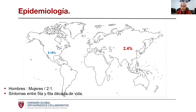En cuanto a la epidemiología, sabemos que es una enfermedad que normalmente se presenta en población asiática. Aún así, la incidencia es baja: 2.4% en esa población, y en el resto del globo la incidencia es del 0.16%. Predominan los hombres con una relación de 2 a 1, y los síntomas normalmente se presentan entre la quinta y sexta década de la vida.